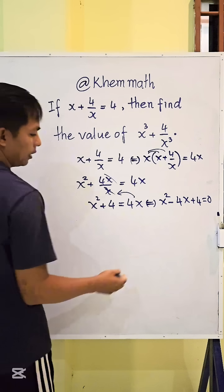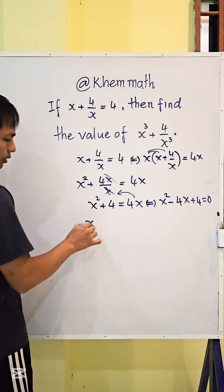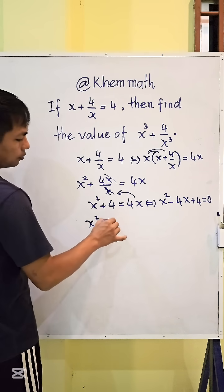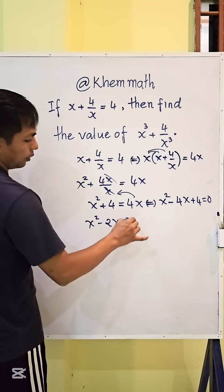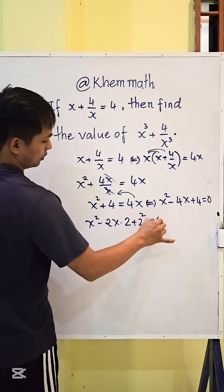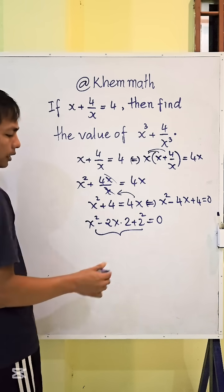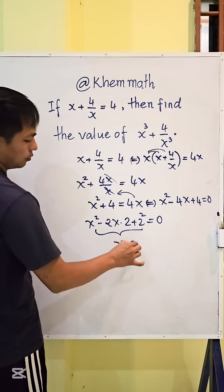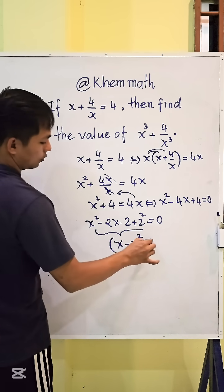And here, I can rewrite it. x squared minus 2 times 2x plus 2 squared equals 0. So we get this perfect square formula. We get x minus 2 all squared equals 0.